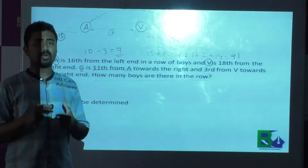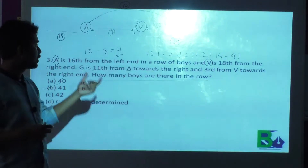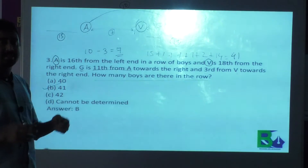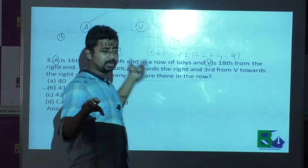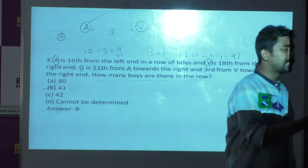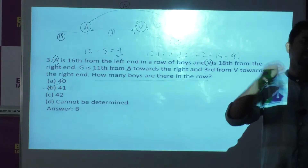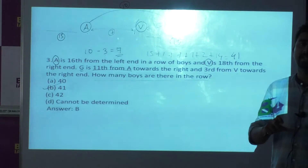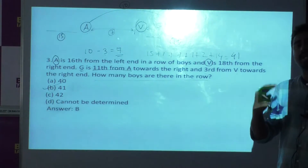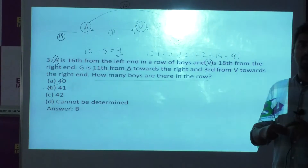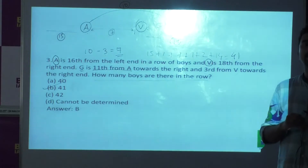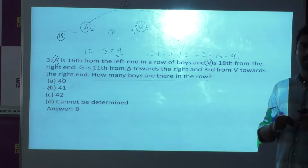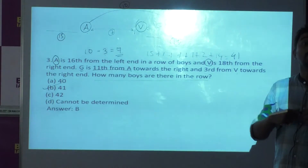This is actually a complicated question from the point of view of arrangement. Just try to find out the number of persons between particular persons. If we try to find a shortcut method, it will be really difficult. Because the question is tricky. If the question is straightforward, only then should we try using a short-term formula. According to me, this problem should be solved using the real concept, not using any shortcut.